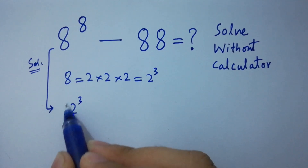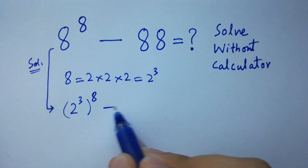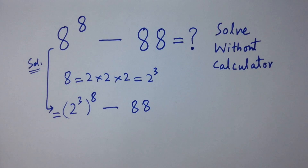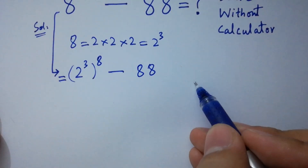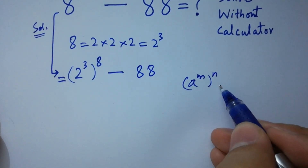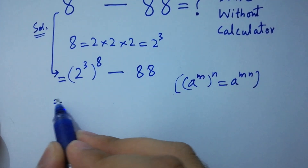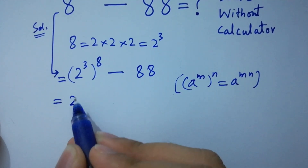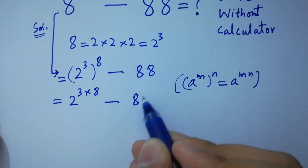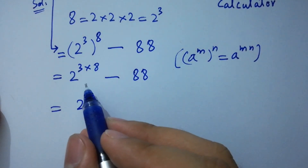So it will be (2³)⁸ minus 88 as it is. Next, using the rule a to the power m to the whole power n equals a to the power m×n, we have 2 to the power 3 times 8, which is 24.